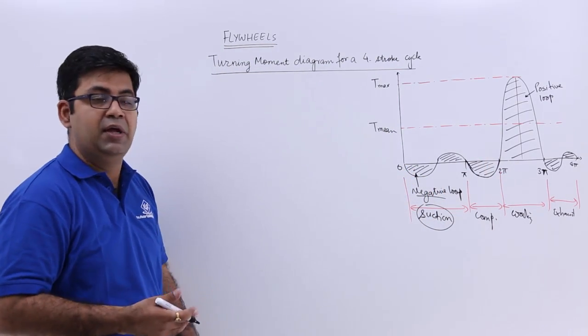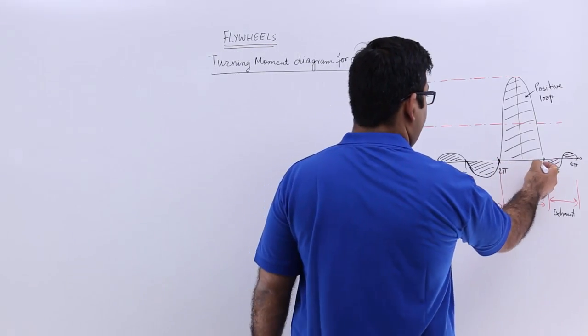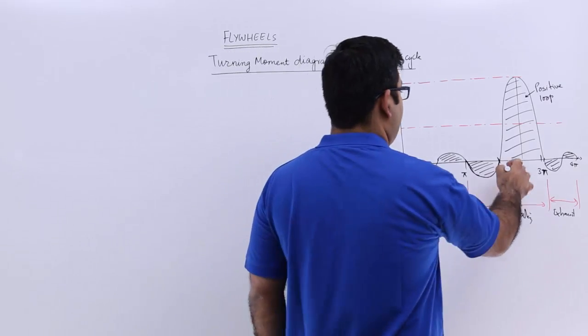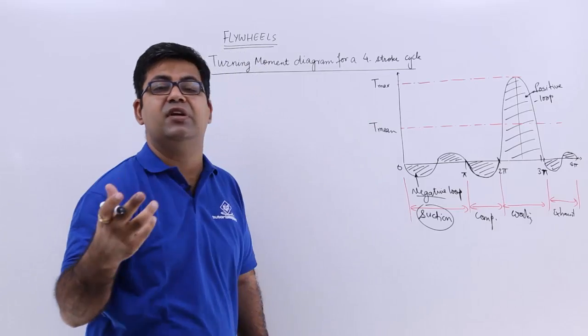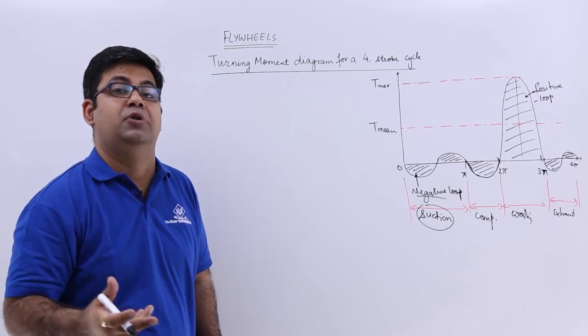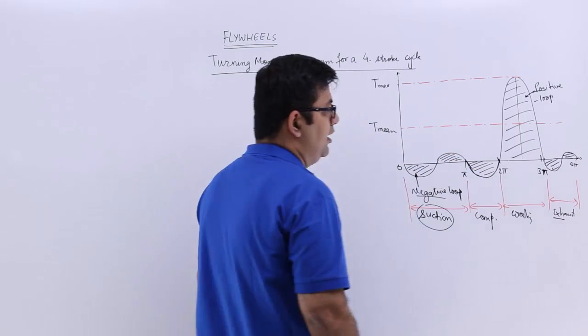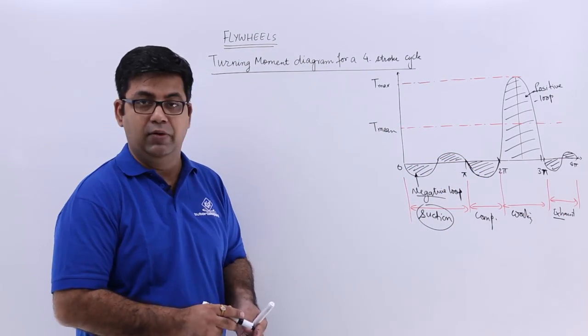The actual work production is in just π rotation of the crankshaft, and this is the loop that is positive in nature, which gives us the energy output. Then you have the exhaust stroke, which again brings about the negative loop in the cycle.